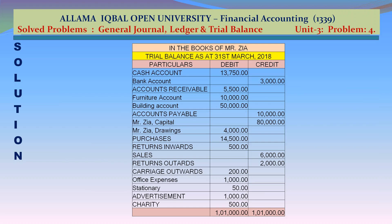Trial balance particulars — debit and credit. Cash account debit Rs 13,750. Bank account credit Rs 3,000. Accounts receivable debit Rs 5,500. Furniture account debit Rs 10,000. Building account debit Rs 50,000. Accounts payable credit Rs 10,000. Mr. Jia capital credit Rs 80,000. Mr. Jia drawings debit Rs 4,000. Purchases debit Rs 14,500. Returns inwards debit Rs 500. Sales credit Rs 6,000. Returns outwards credit Rs 2,000. Carriage outwards debit Rs 200. Office expenses debit Rs 1,000. Stationery debit Rs 50. Advertisement debit Rs 1,000. Charity debit Rs 500. Total debits Rs 1,00,000; total credits Rs 1,00,000.